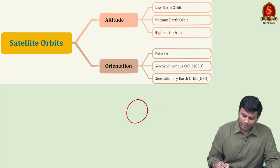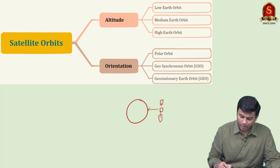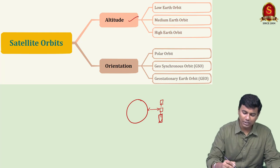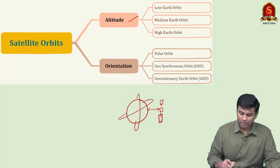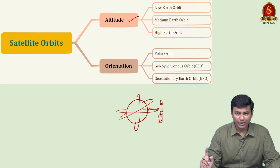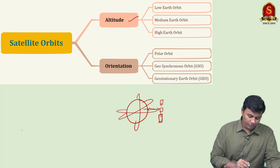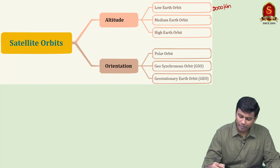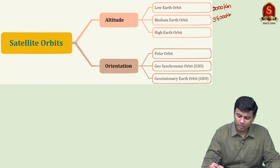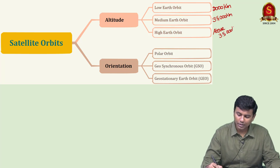Altitude means how far from the surface of earth the satellite is located. Orientation means the direction in which it orbits — for example, pole to pole, slanting, or right above the equator. Based on altitude: low earth orbit is up to 2000 kilometers, medium earth orbit is from 2000 up to 35,000 kilometers, and high earth orbit is above 35,000 kilometers.